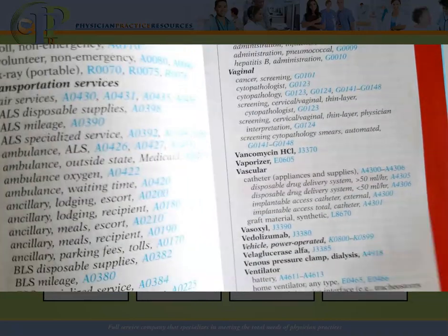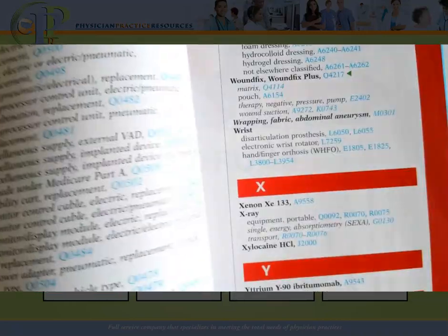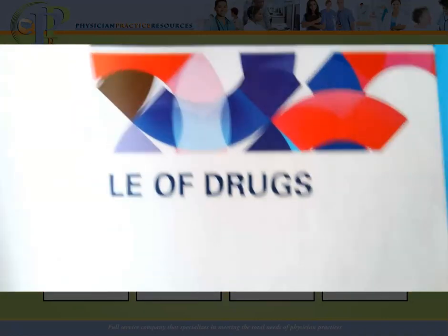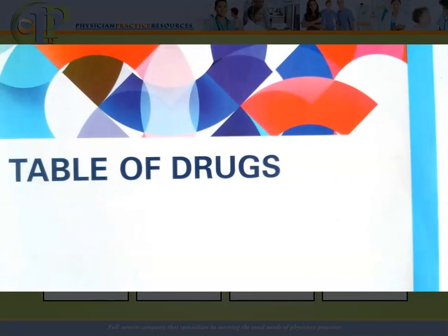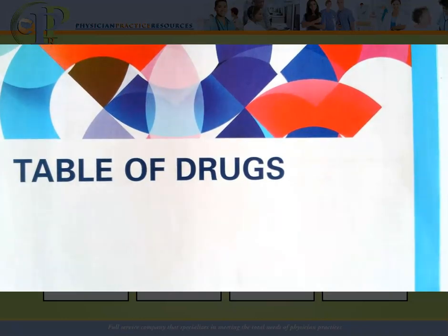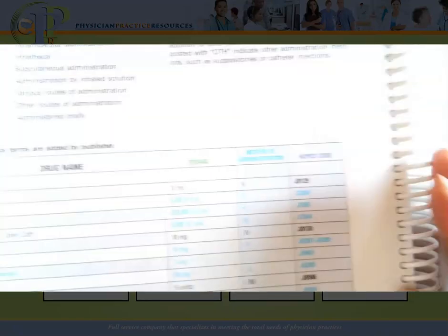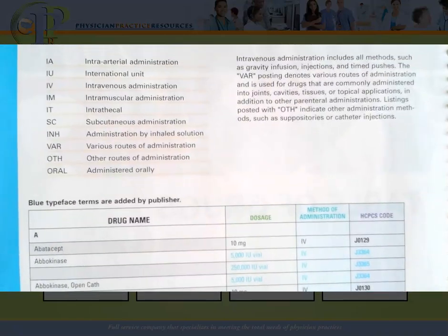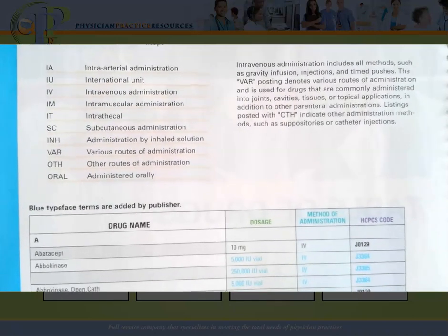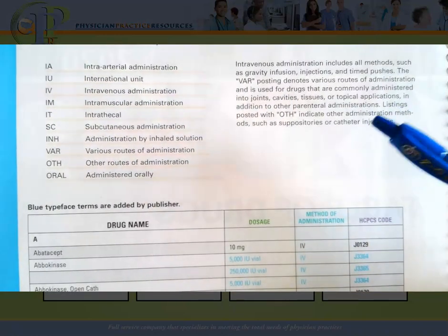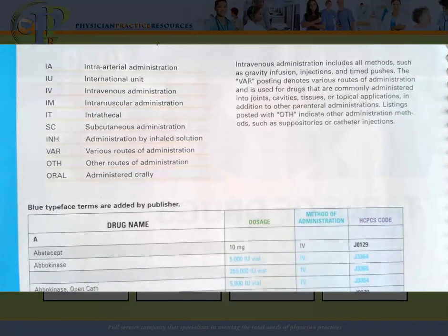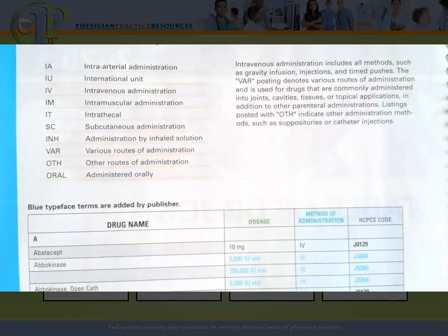After the index, you have what's known as the table of drugs. Remember those J codes I mentioned? Here is where you'll find the table of drugs. At the very beginning of the table, you are given information about the different routes of administration for particular drugs — something you'll want to pay attention to in addition to the instructional paragraph.